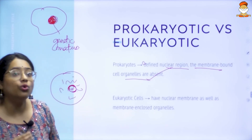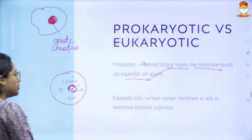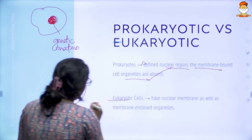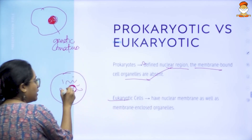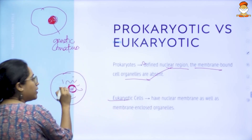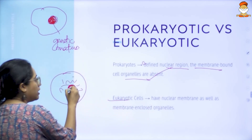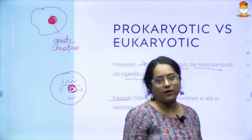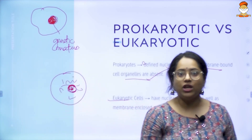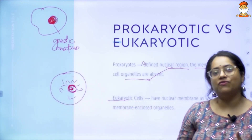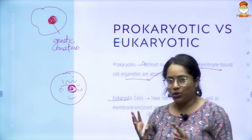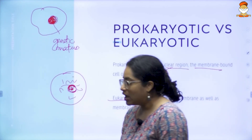In eukaryotes, you have a nuclear membrane, and because it has a nuclear membrane, all these particles are enclosed in it. So there is a clear difference between prokaryotes and eukaryotes.